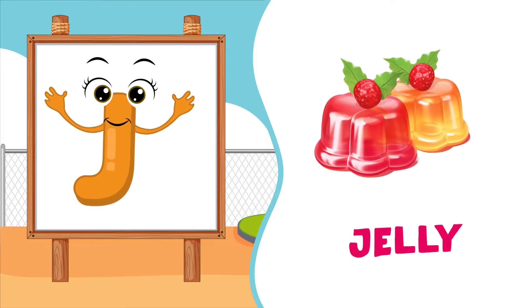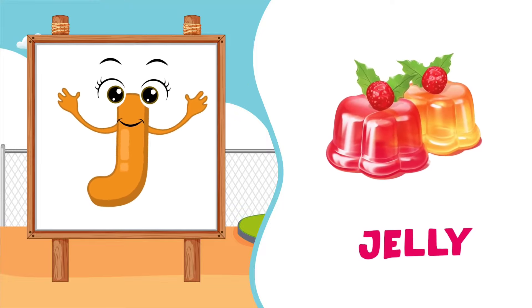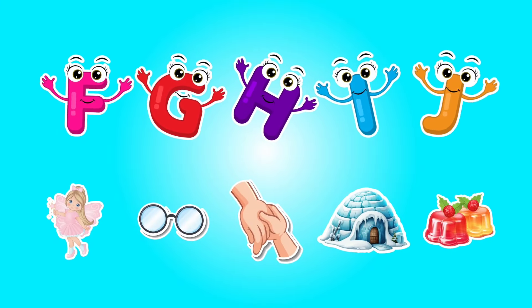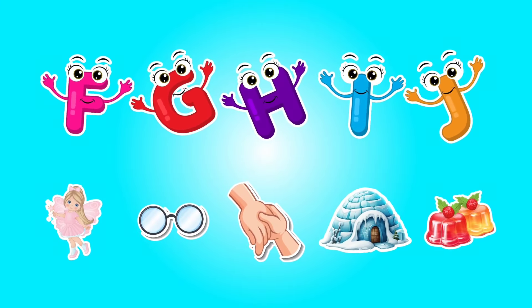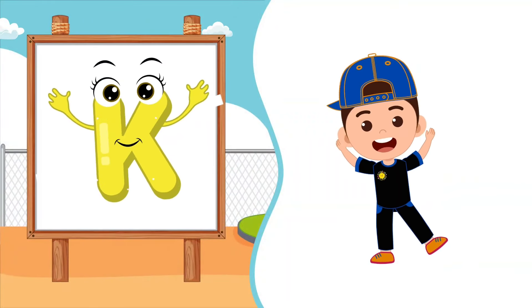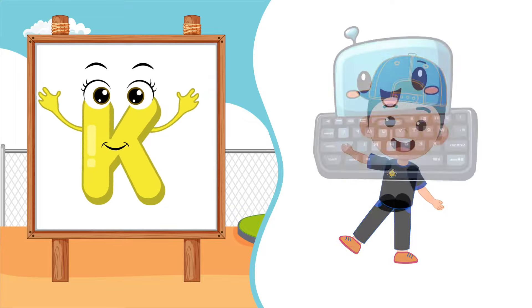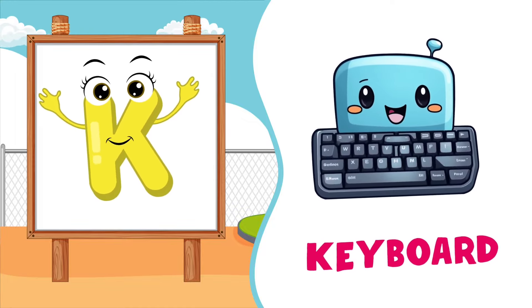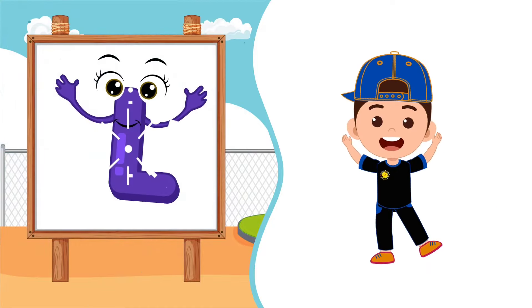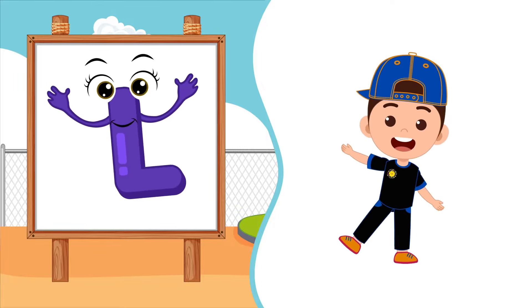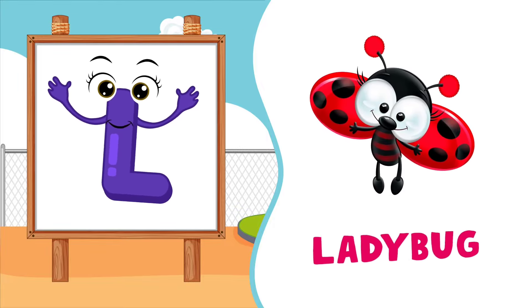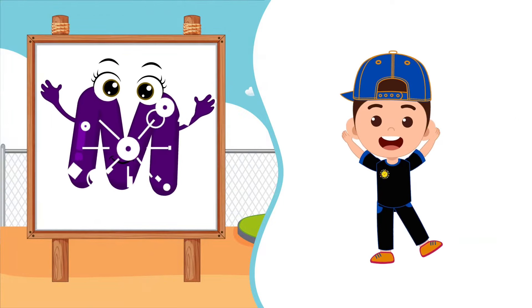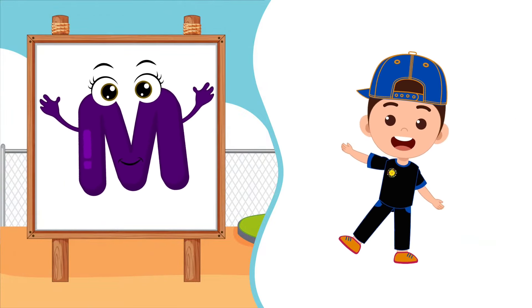J is for Jelly, J-Jelly, J-Jelly. J, Jelly. K is for Keyboard, K-Keyboard, K-Keyboard. K, Keyboard. L is for Ladybug, L-Ladybug, L-Ladybug. L, Ladybug.